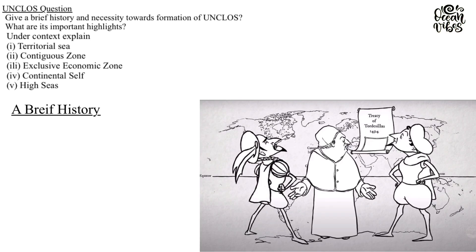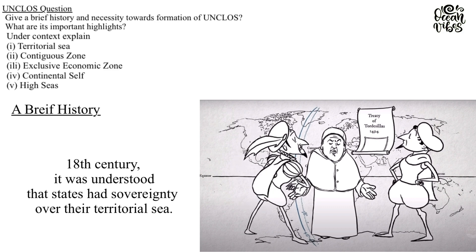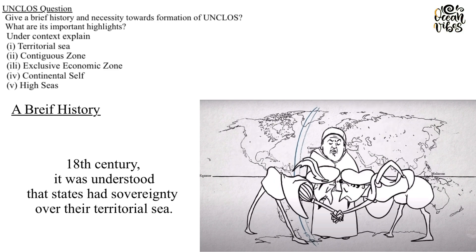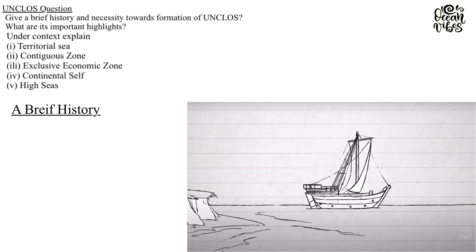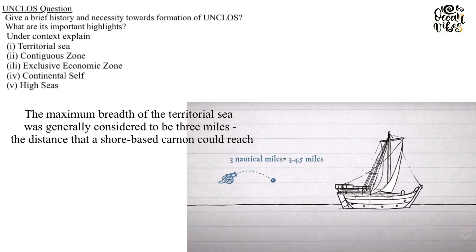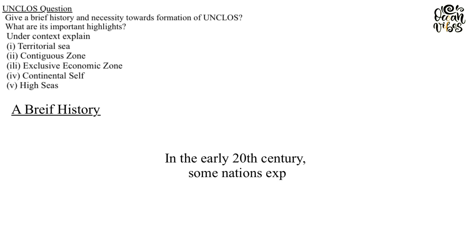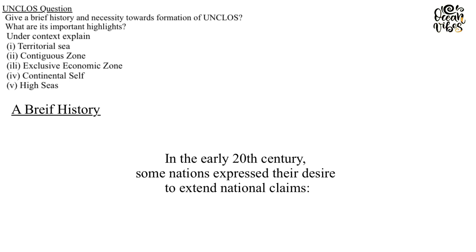Brief history: The law of the sea developed from the struggle between coastal states who sought to expand their control over marine areas adjacent to their coastlines. By the end of the 18th century, it was understood that states had sovereignty over their territorial sea, the maximum breadth of which was generally considered to be three miles — the distance that a shore-based cannon could reach.